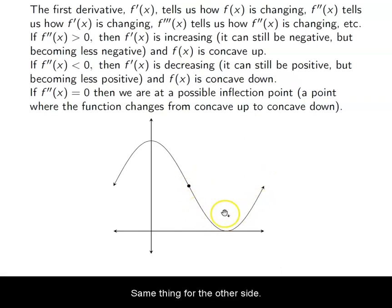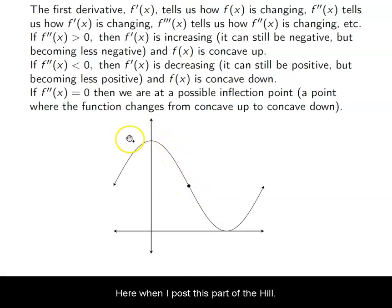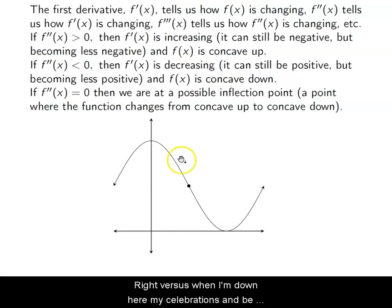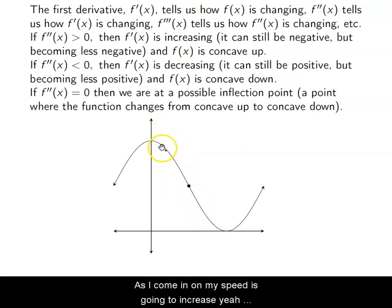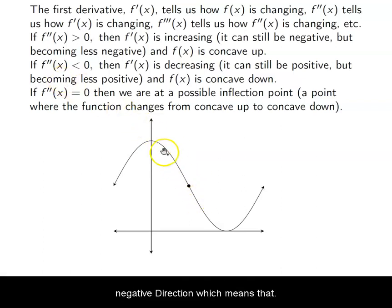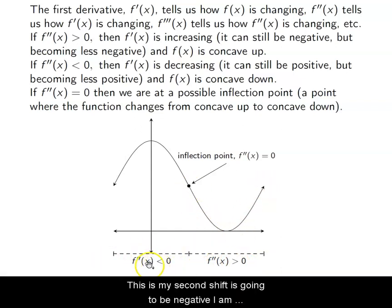When my first derivative is negative and decreasing, that means I'm concave down. My second derivative, which tells me how my first derivative is changing, indicates that the rate of change of my original function is decreasing — it's slowing down. Think about it as a roller coaster. As I approach the top of the hill, my rate of change isn't changing too fast. Coming down, I'll have very quick acceleration, but as I reach the bottom the acceleration slows down. The rate at which my speed is changing is slower here than it is at the top — and it's changing in a negative direction, meaning my function is decreasing.